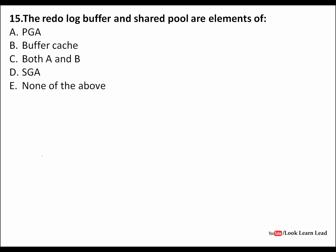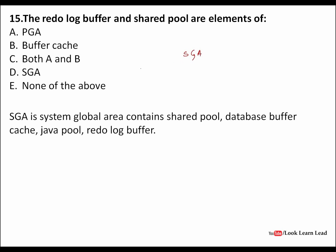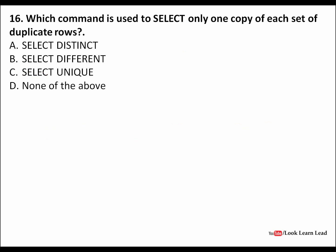The redo log buffer and shared pool are elements of SGA — System Global Area. SGA contains: shared pool, database buffer cache, Java pool, and redo log buffer. Since redo log buffer is part of SGA, the answer is D — SGA.